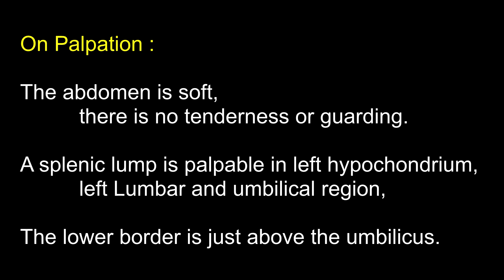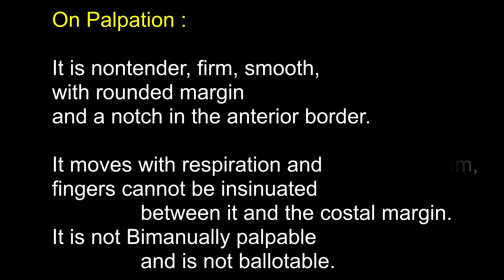On palpation, the abdomen is soft, there is no tenderness or guarding. A lump is palpable in the left hypochondrium, left lumbar and umbilical regions. The lower border is just above the umbilicus. It is non-tender, firm, smooth with rounded margin and a notch is felt in the anterior border. It moves with respiration and fingers cannot be insinuated between it and the costal margin. It is not bimanually palpable and not ballotable.